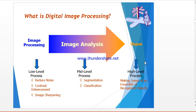In mid-level processing — segmentation and classification — we can extract attributes such as edges, contours, and the identity of individual objects. The third category is high-level processing, which involves making sense of an ensemble of recognized objects, performing the cognitive functions normally associated with vision at the far end of the continuum.